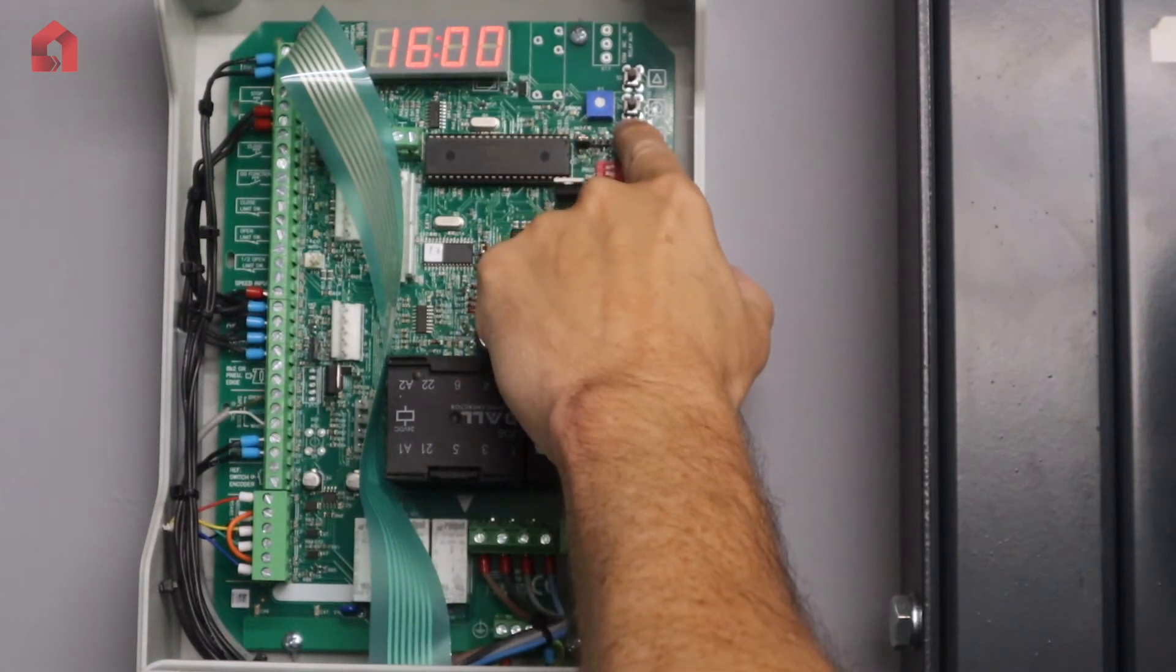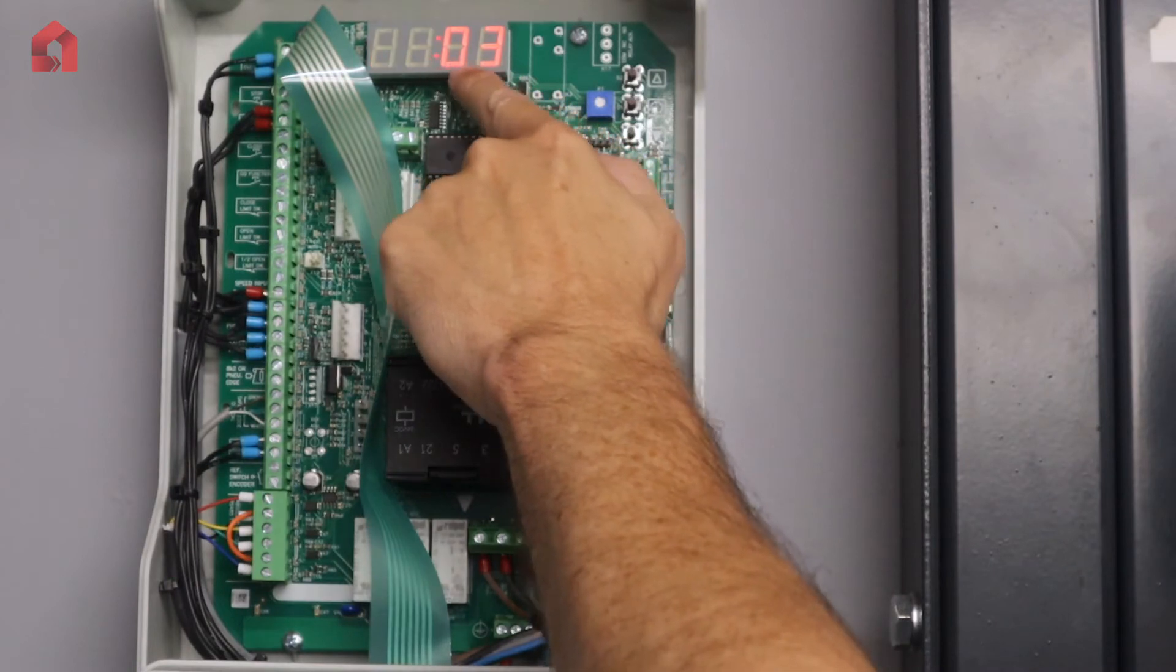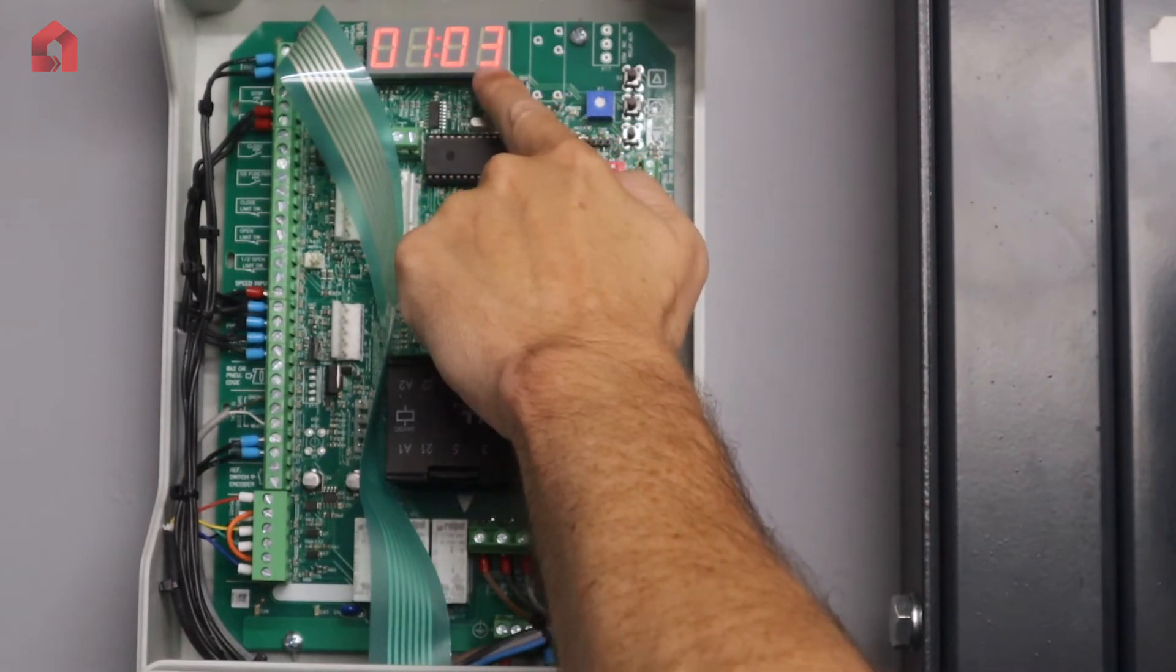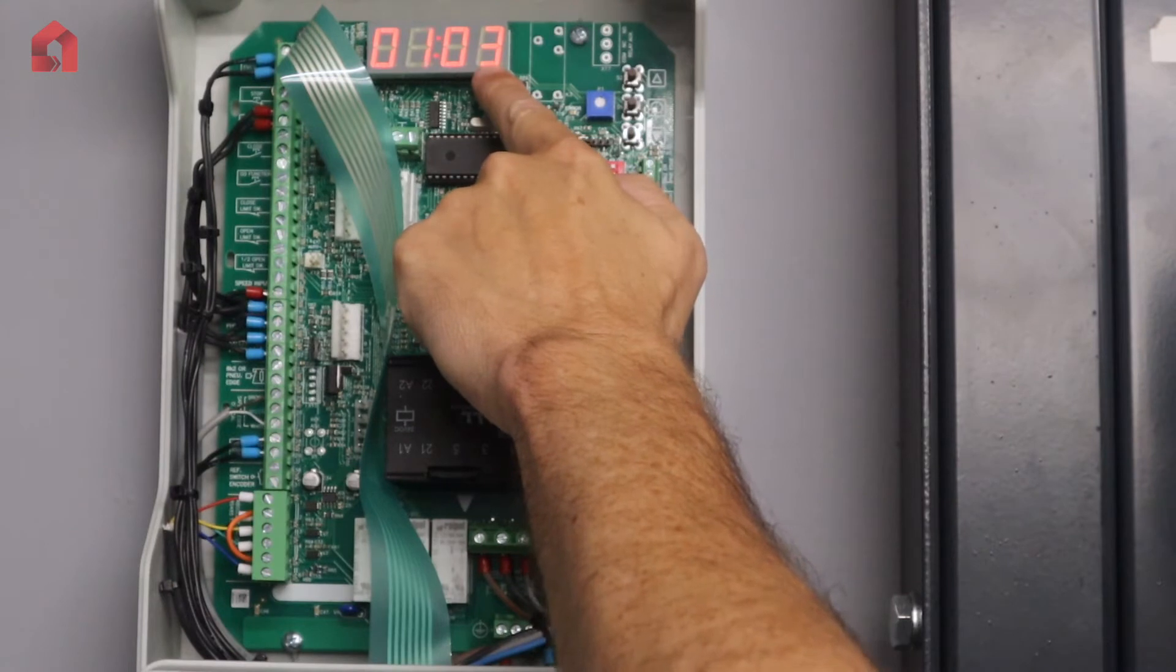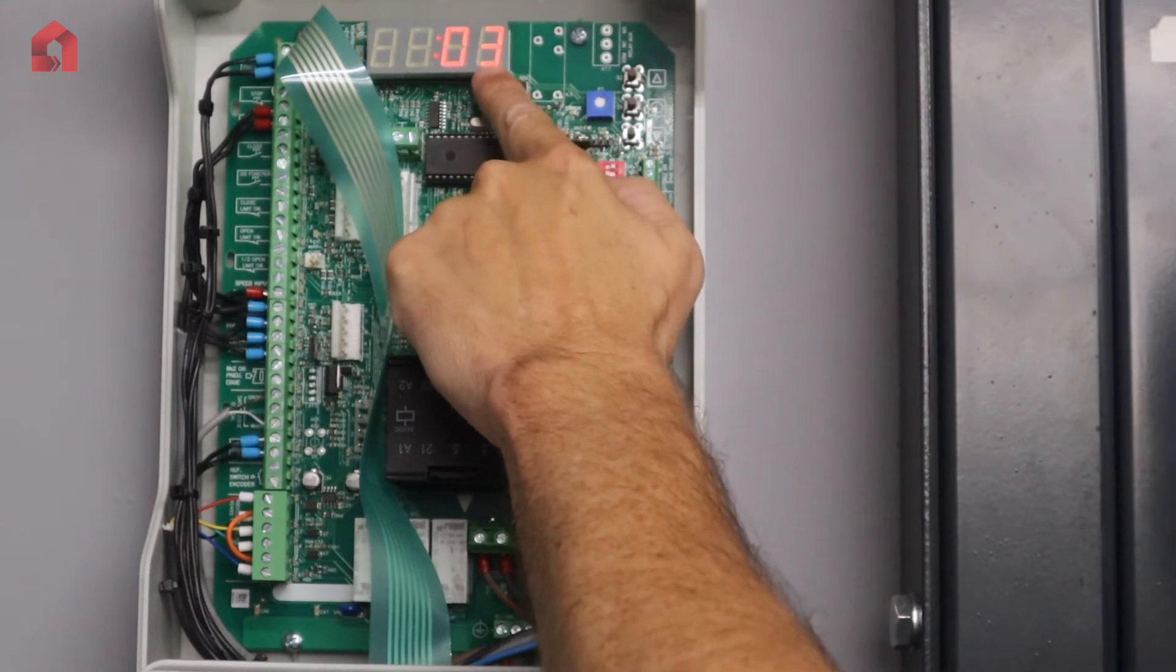So for example, if I go down to parameter 01, that is telling you how the door is running. So 03 is for impulse up and impulse down operation. So if you didn't have any safety features on the door and you just wanted dead man,